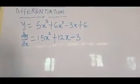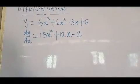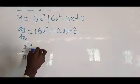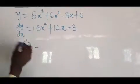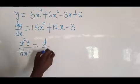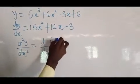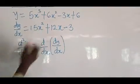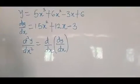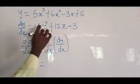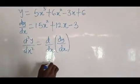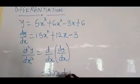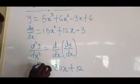If you are told to find the second derivative, it is very simple. Your d²y/dx² means you differentiate your dy/dx again, because d²y/dx² is the same thing as d/dx of (dy/dx). So you are differentiating this one again. After that, differentiating again, we get 2 times 15 = 30x, and differentiating 12x gives 12. That is how you find d²y/dx², which is the second derivative.